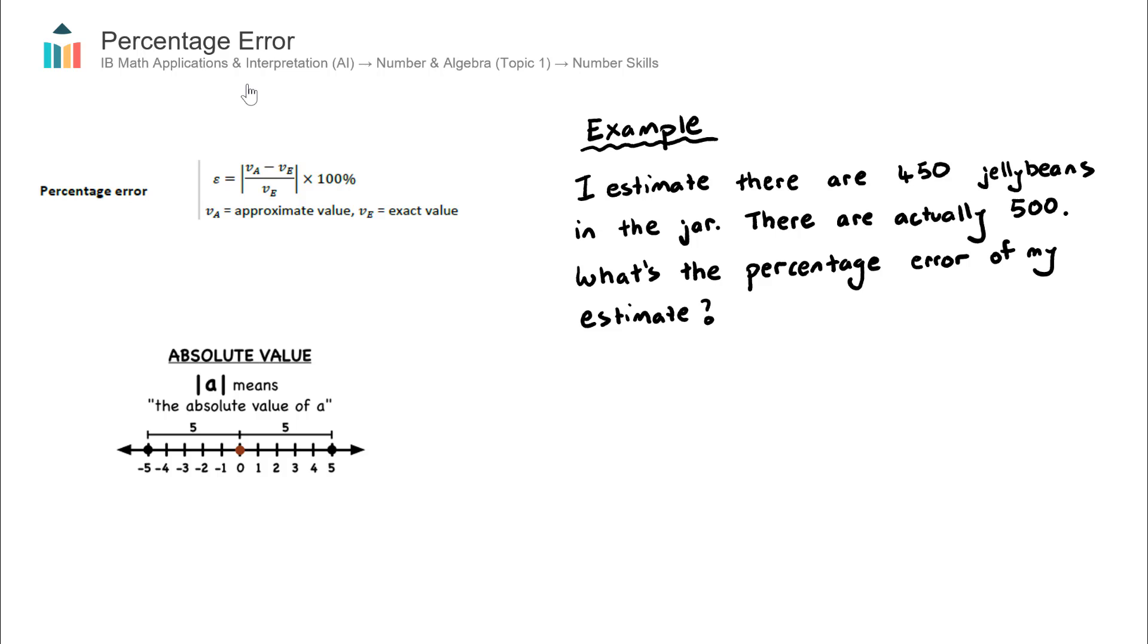This video covers percentage error, an important concept in IB Math's AI Topic 1 Number and Algebra. Percentage error usually appears once in an exam session, either in Paper 1 or Paper 2.